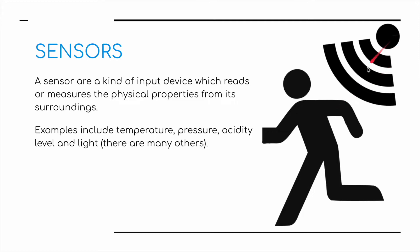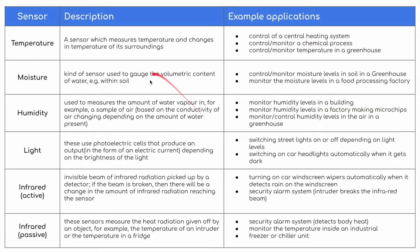There's a motion sensor here which will detect any kind of movement underneath it. So here we've listed most of the sensors covered in the syllabus. First of all, temperature: a temperature sensor measures temperature and changes in temperature of its surroundings. We might see it used in the control of central heating systems, control and monitoring of a chemical process, and possibly the control and monitoring of the temperature inside a greenhouse where we're growing plants, fruit, and vegetables.